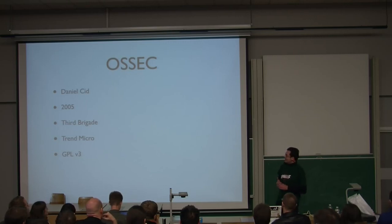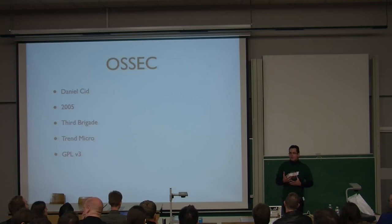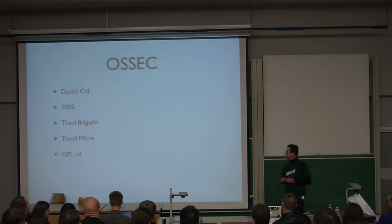The tool is developed by Daniel Cid. Somewhere before 2005, he was using Tripwire, which you probably know, on a lot of systems. And he had a lot of problems managing those logs. So he started developing, starting from a problem he had himself. And that developed into SysCheck. It was the first name of OSSEC. And then he started building tools around it. In 2005, he released the first open source version. It's licensed under the GPL V3.